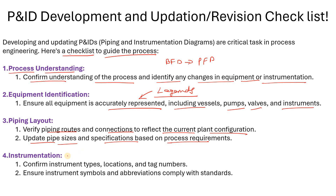The next point, which is very important, is your instrumentation. Confirm instrument types, location, and tag numbers. You will determine instrument types based on the fluid service, temperature, and process variables — which type of instrument is suitable. Then you will assign the tag number as per the area code or as per your P&ID. Ensure that the instrumentation symbols and abbreviations comply with standards — that point is also very important.